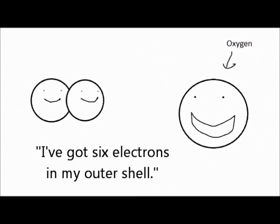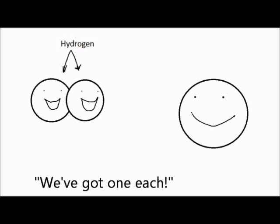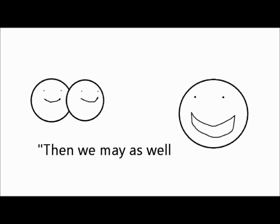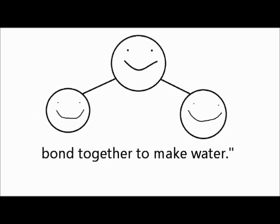I've got six electrons in my outer shell, we got one each! Then we may as well bond together — to be water, that's easy! This is the freestyle section where I need to tell you that a covalent bond is a shared pair of electrons between two non-metal atoms, attracting the positive nuclei of the two atoms involved.